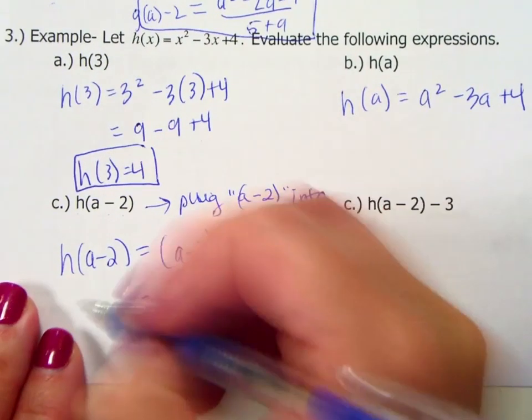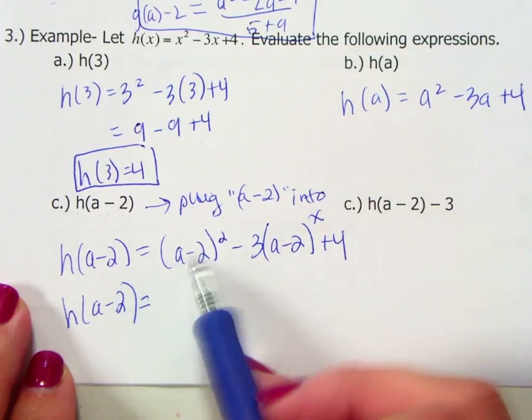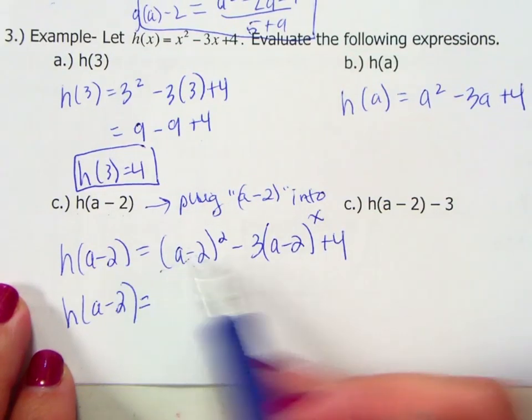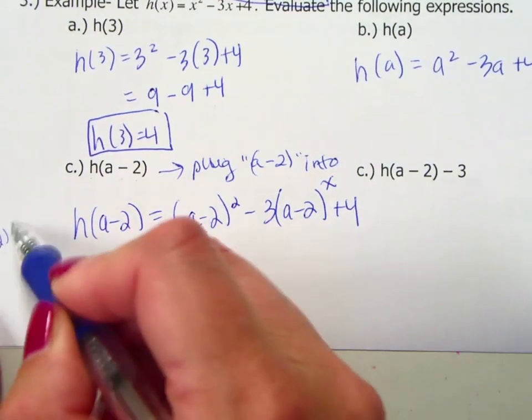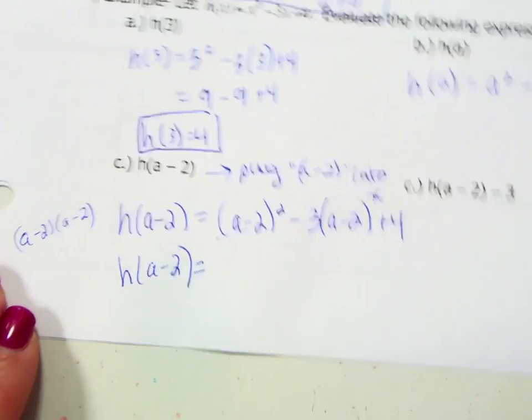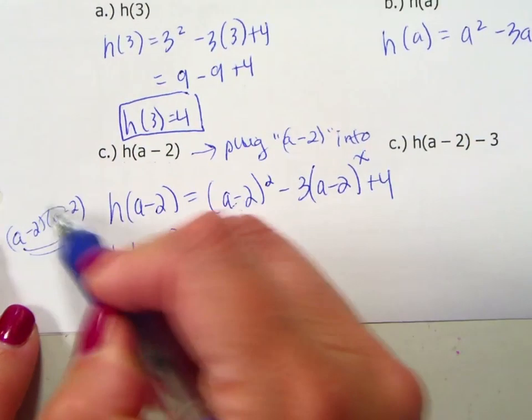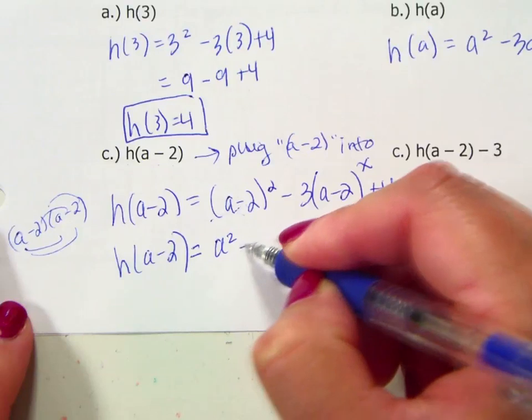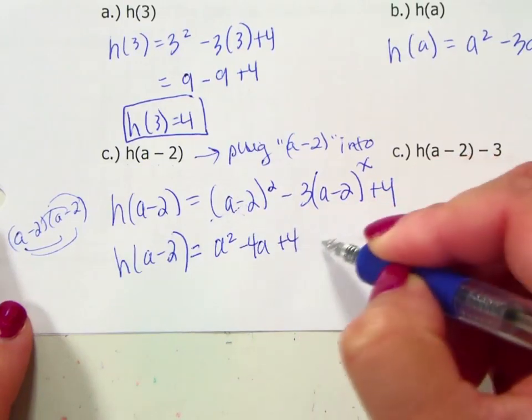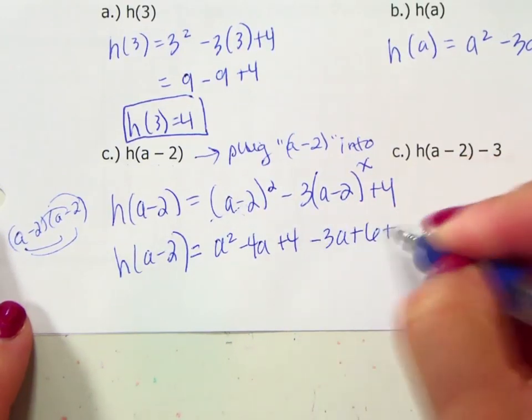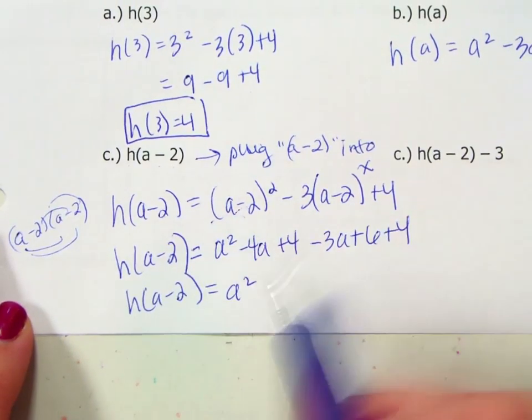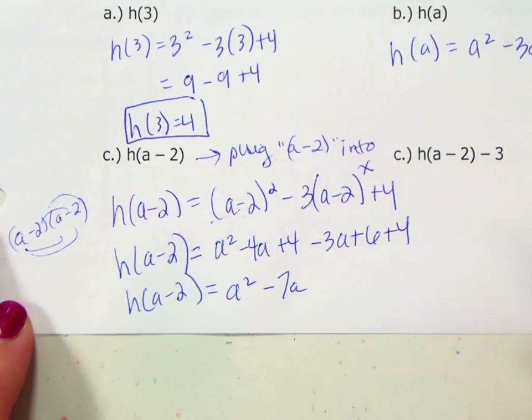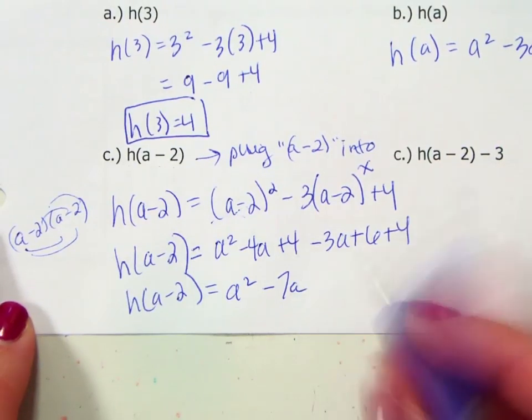Now, here come your algebra skills hopefully. We have a little bit of multiplication here. Please do not make an algebra 1 mistake and say that that is a squared plus 4. You have to remember that when you are multiplying binomials, that this is the quantity a minus 2 times the quantity a minus 2. From there, you would distribute twice. That turns into a squared minus 4a plus 4 minus 3a plus 6 plus 4. And then simplify anything that you can. So I have a negative 4a and a negative 3a is a negative 7a. And then I have a 4, a 6, and a 4 gives me 14.